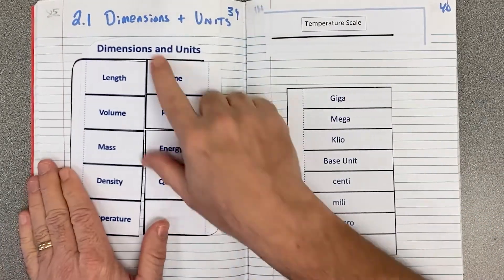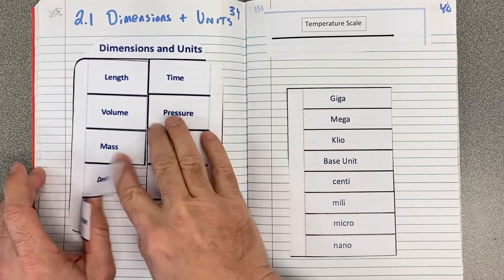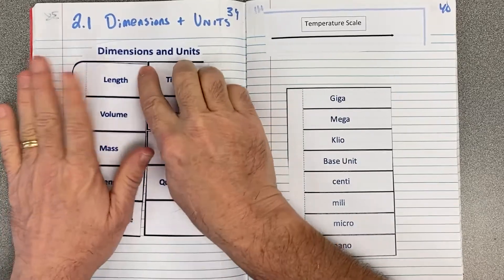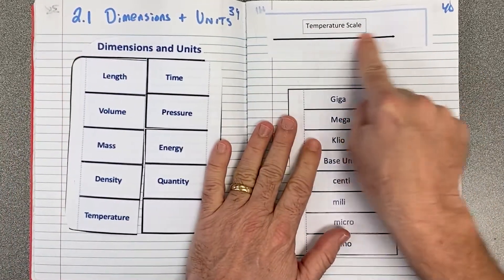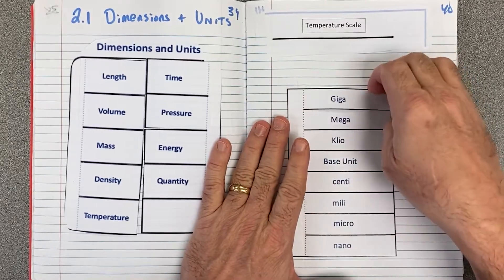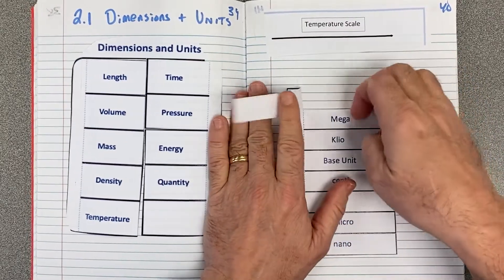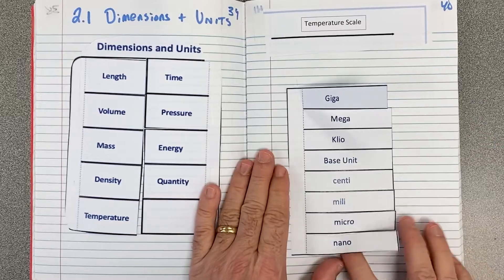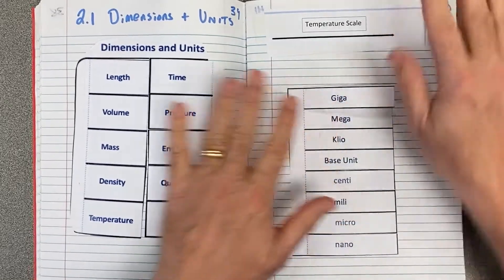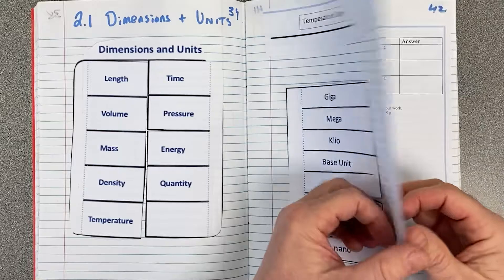Then we're going to jump to section 2.1. Notice there are dimensions and units. Notice how this flips up and you're going to write some things underneath length. Put this temperature scale here. I talk about that in the video. In these, you've got giga, mega. These will fold out, so figure out how to do that foldable. You'll take the notes on this page when you get to 2.1 notes.